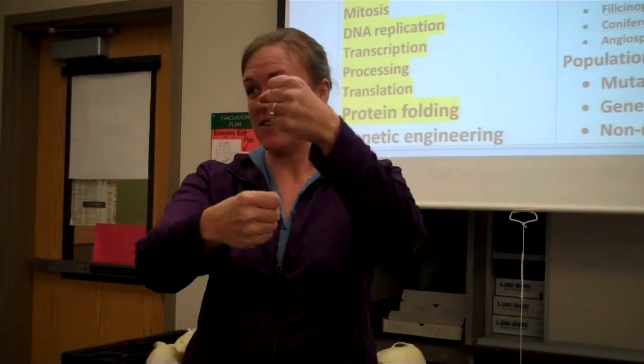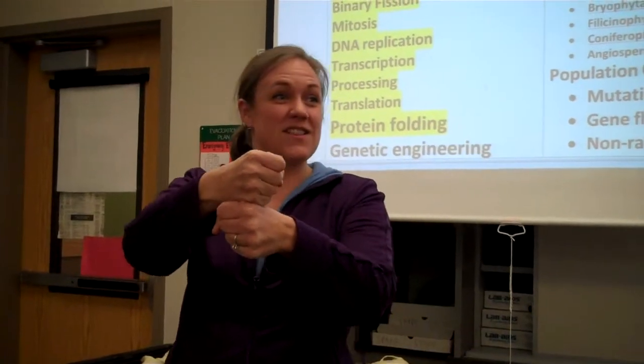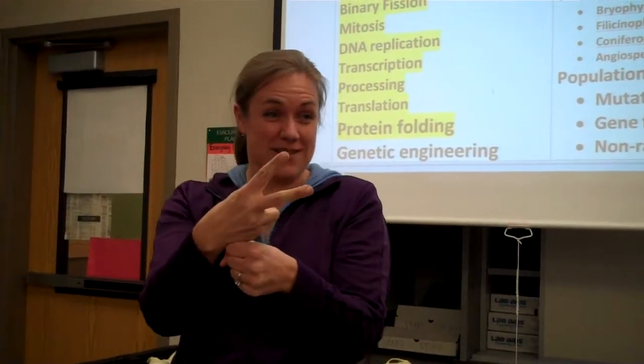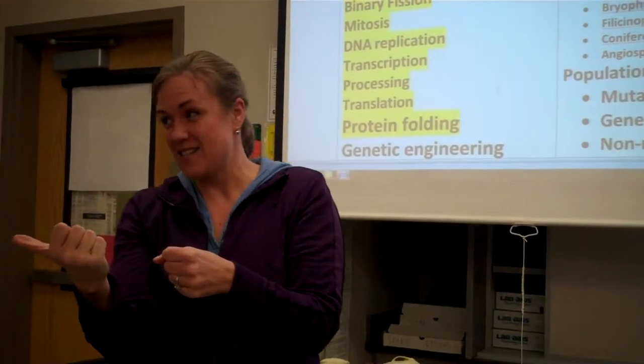One, two, three, four. And then in secondary structure, there's two shapes that form: alpha helix, beta pleated sheet.